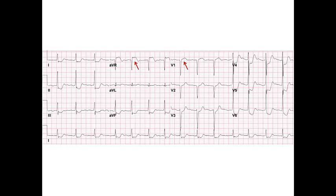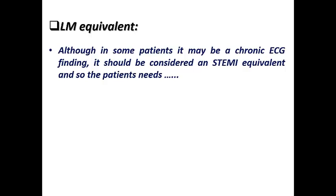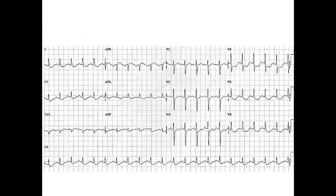Looking at this ECG example, we can see ST elevation in AVR and V1, with ST depression in most inferolateral leads: leads 1, 2, 3, AVF, and V3 to V6 — consistent with left main equivalent. Another example also shows ST elevation in V1 and AVR with ST depression in inferolateral leads, suggestive of left main equivalent. If a patient presents with chest pain and this ECG pattern, they should be scheduled for primary PCI to determine whether there is a culprit vessel occlusion requiring urgent revascularization — not just an early invasive strategy.